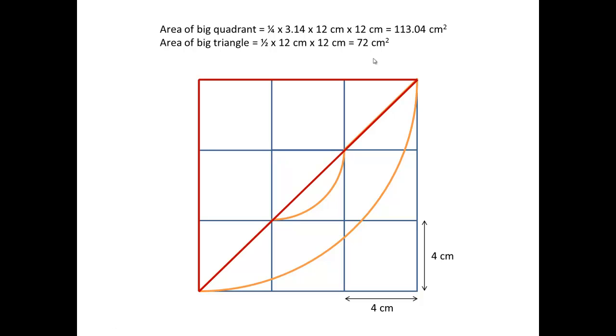And finally, we can take this large quadrant minus this large triangle to give us this figure here, that will be 41.04 cm squared. Now, we have this watermelon-like structure in red. However, that is not our required area, because we still have this orange part to settle.